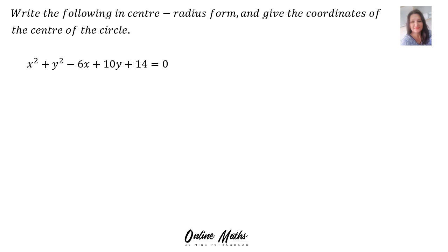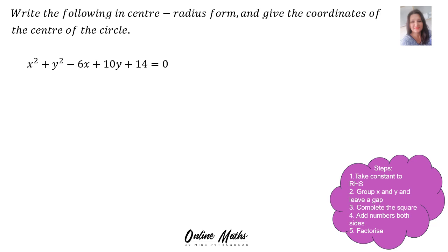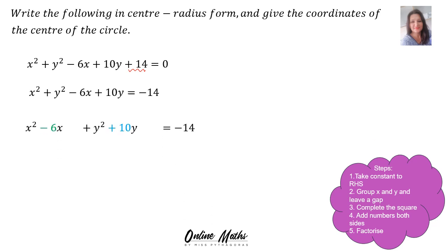Write the following in centre radius form and give the coordinates of the centre of the circle. First of all, there are some steps that we will follow. Step 1: take the constant to the right-hand side. The constant here is plus 14 — it walks across and becomes negative 14. Step 2: group x and y terms and leave a gap. Write all the terms containing x together and all the terms containing y together. It becomes x squared minus 6x, with a gap, plus y squared plus 10y, with a gap, equals negative 14.